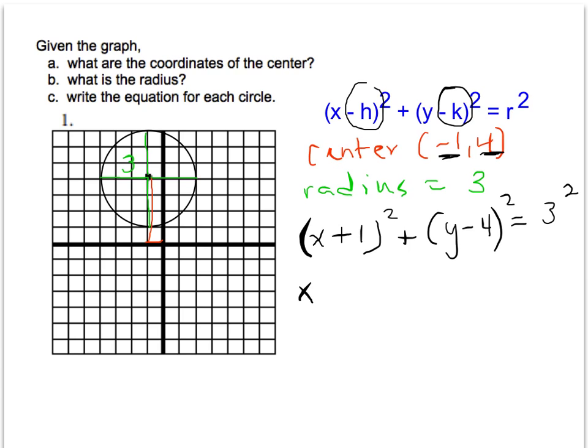For the last step, I'm going to leave the x and y values like that. 3 squared is 9, and this is the equation of this circle. Just a quick double check at the end: my x value is negative, so in my equation it's positive. Y value positive, in the equation it's negative, and then I take the radius squared.